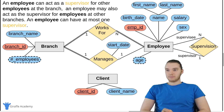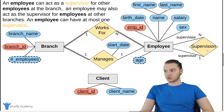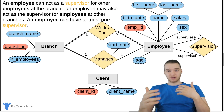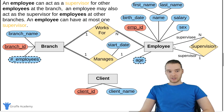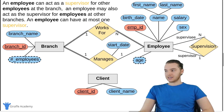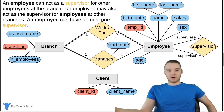We also have a supervision relationship. It says an employee can act as a supervisor for other employees at the branch, and an employee may also act as a supervisor for employees at other branches. An employee can have at most one supervisor. This supervision relationship is actually a relationship that an employee has to itself — it's a recursive relationship between employees. An employee can be supervised by only one supervisor, but an employee can supervise any number of employees.